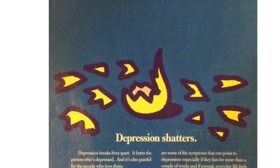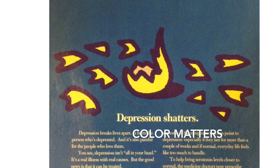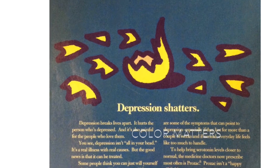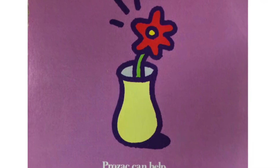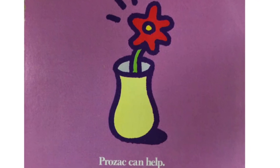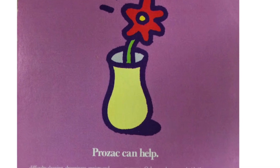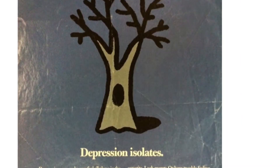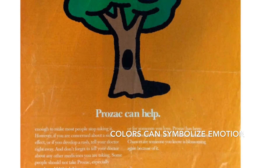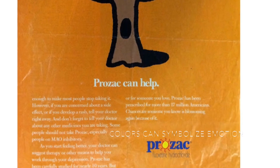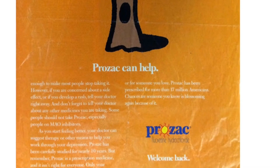Color also matters, as these old Prozac ads show. Different colors are used to express different emotions. The artist used grays and grayish blues for the dead tree in winter, and much warmer colors for the live tree after the person starts taking their medication.